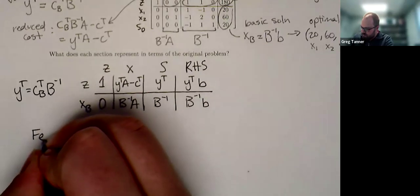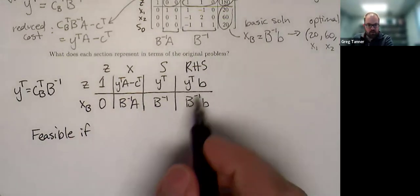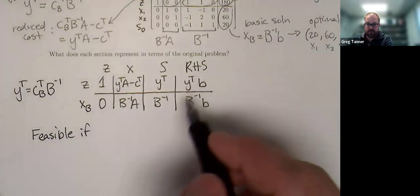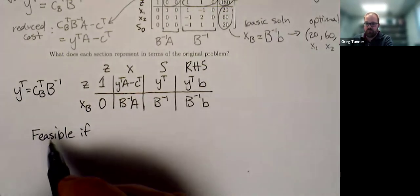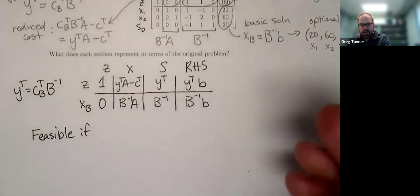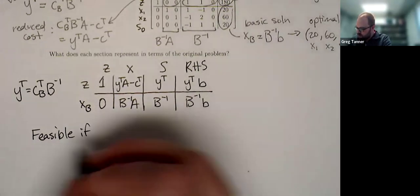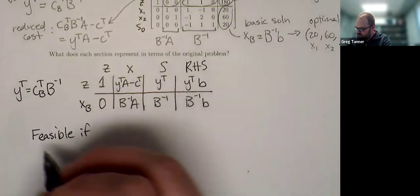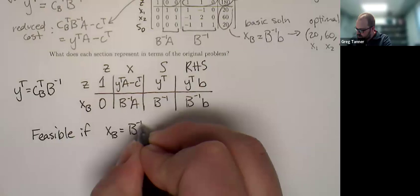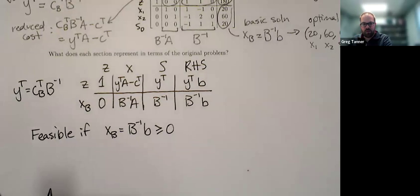So we're feasible if we need that this XB, the basic solution, needs to be greater than or equal to zero. As long as it's greater than or equal to zero, we're still feasible. If any of the entries of the basic solution go negative, then we're into infeasible solutions and we've left our feasible region. So our current solution is feasible if XB, which is B inverse B, if all those entries are greater than or equal to zero.